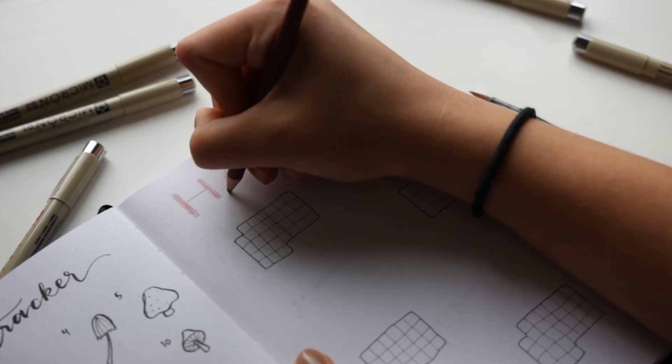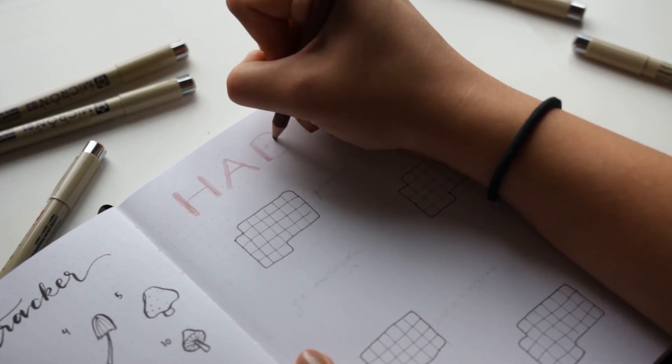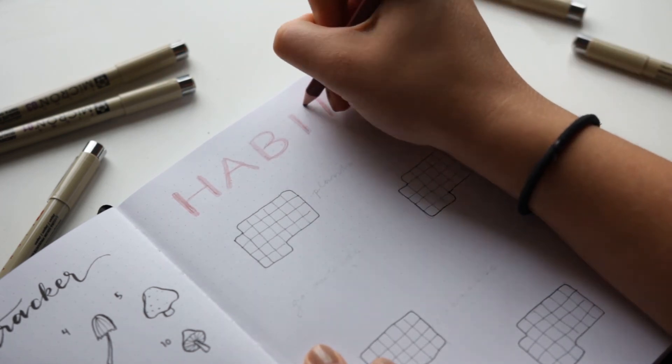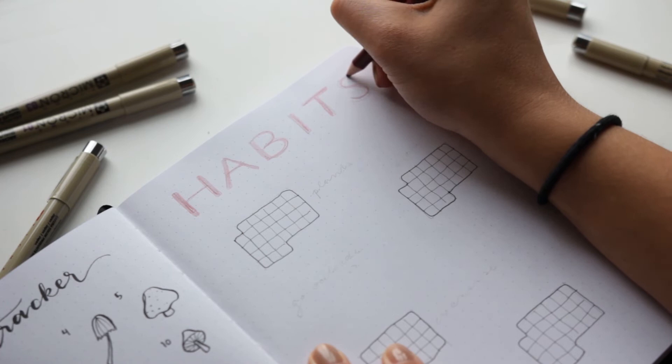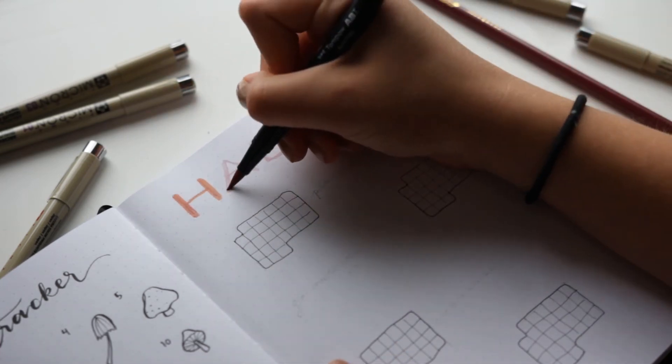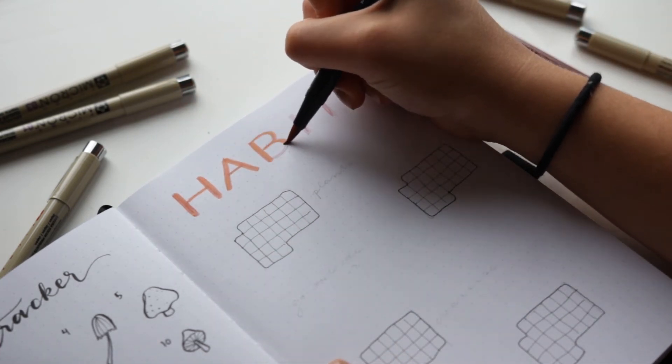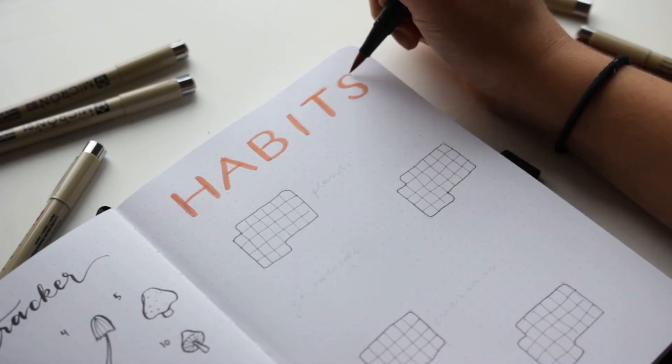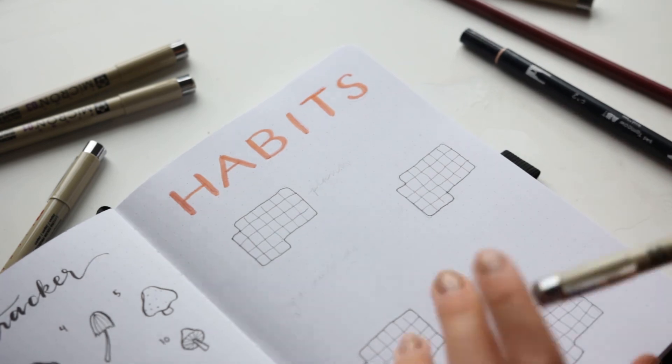So the first habit that I'm tracking is watering my plants because go watch my latest video. I became a plant mom and it was cute and I drew some cute little graphics. But my first habit that I want to track is when I'm watering my plants to make sure that I don't kill them because that normally happens and I don't want it to happen this time.